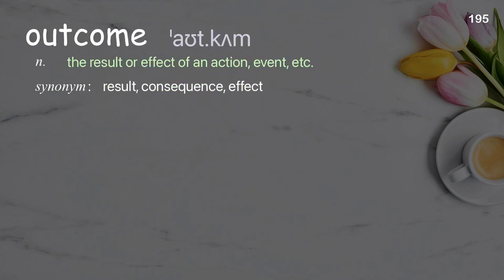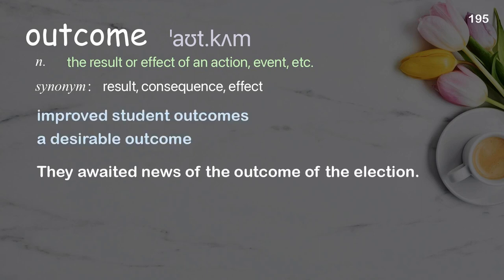Outcome: the result or effect of an action, event, etc. Examples: improved student outcomes, a desirable outcome. They awaited news of the outcome of the election.